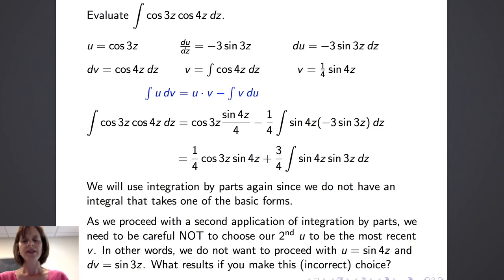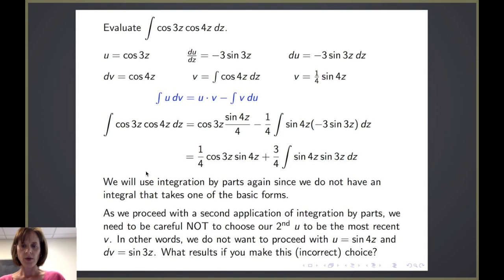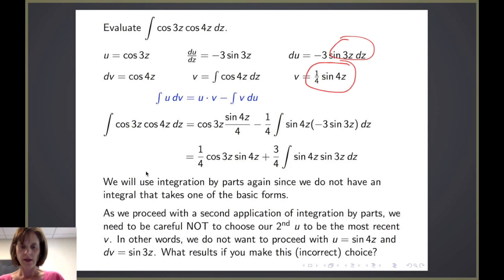As we proceed with the second application of integration by parts, we have to be careful not to choose our second u to be the most recent v. In other words, we would not want to choose u equal to sine of 4z and dv to be sine of 3z. If we make this incorrect choice, we would undo the work we just did and get back to our original integral without going anywhere.